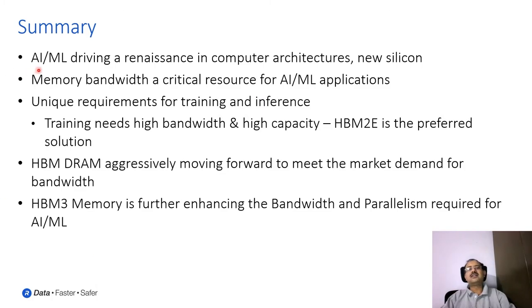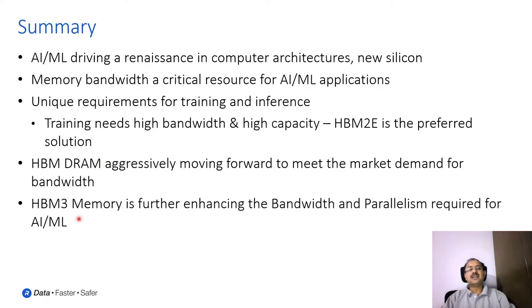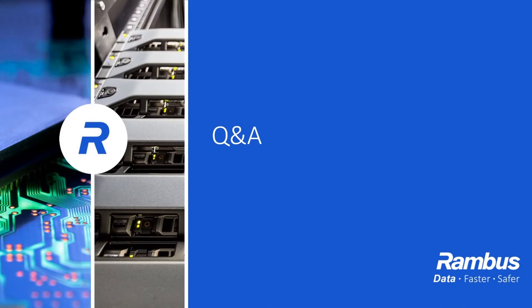In summary, AI/ML is now driving a complete renaissance and revolution in computer architecture. A lot of new silicon is being designed to cater to these needs, and memory bandwidth becomes very, very crucial. These requirements come from the fact that training data used to train AI/ML networks requires high bandwidth as well as high capacity. As of today, HBM2E is one of the preferred solutions, and HBM DRAM is moving aggressively to meet all demands that the AI/ML industry is posing. HBM3 is going to be the futuristic leader, with its high bandwidth and parallelism, chosen by AI and ML applications. This concludes the prepared presentation; we are now happy to take any questions.